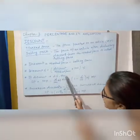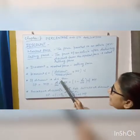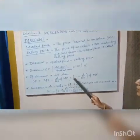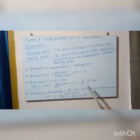If discount is D%, then SP, selling price equals MP minus D by 100 of MP. Mark price equals 1 minus D by 100, full bracket close, of MP.